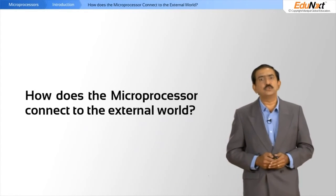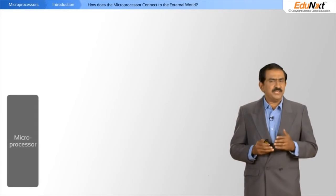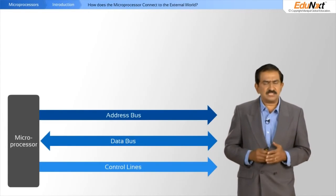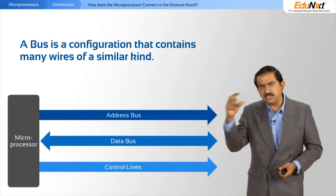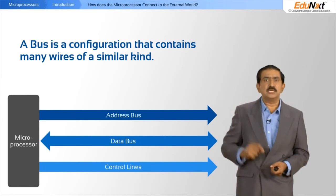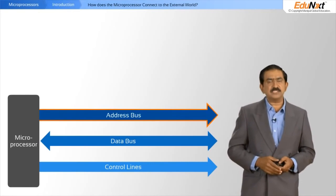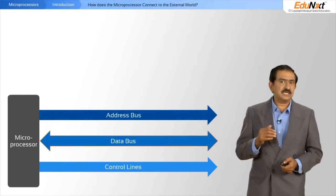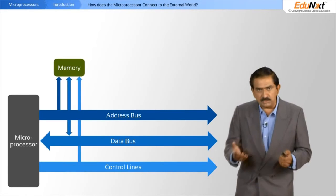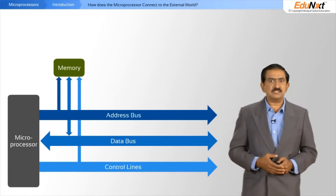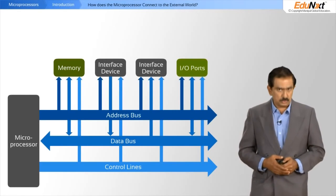How does the processor connect to the external world? It has three kinds of buses: a bus is a configuration containing many wires of a similar kind. You have the address bus, the data bus, and a control bus. Each of these are connected to memory devices, various interface devices, or I/O ports.